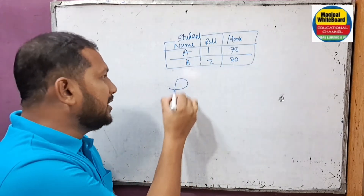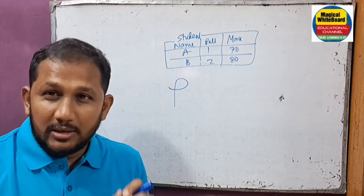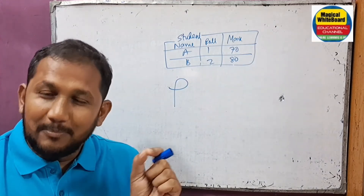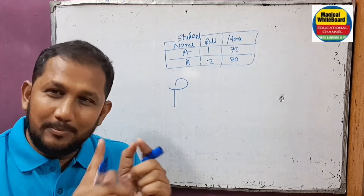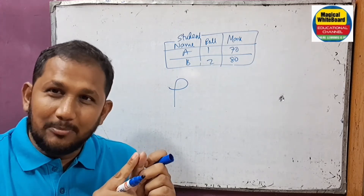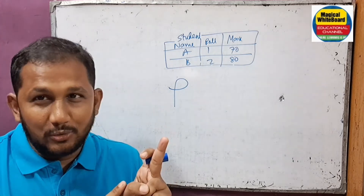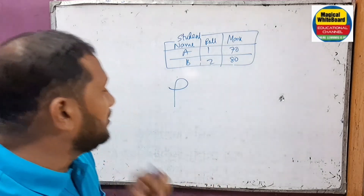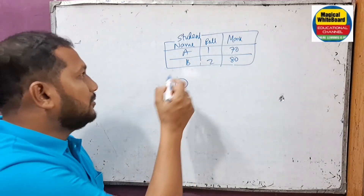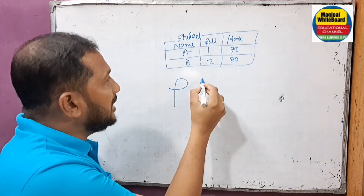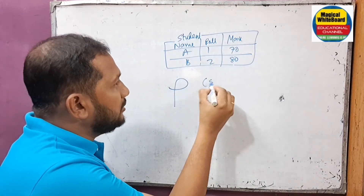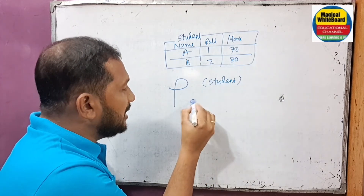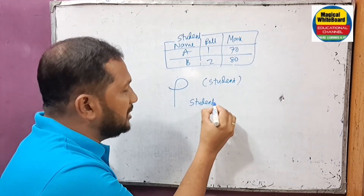I will denote: row for Rho, sigma for selection, pi for projection, p for project, s for sigma, row for rename. So this is the name of the student table. What is the new name of the student? I want to give it 'student-info.'